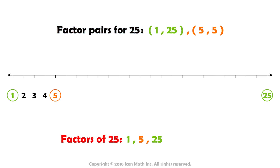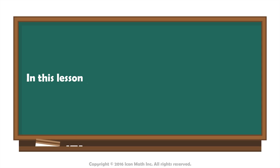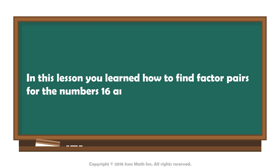And the factors for the number 25 are 1, 5 and 25. In this lesson, you learned how to find factor pairs for the numbers 16 and 25 using the number line.